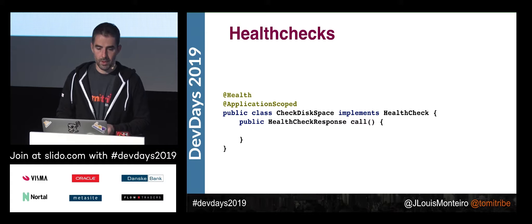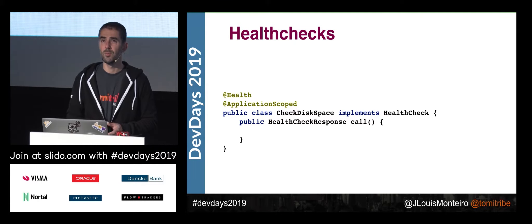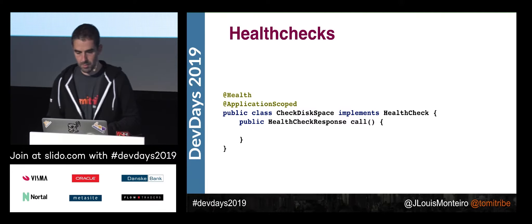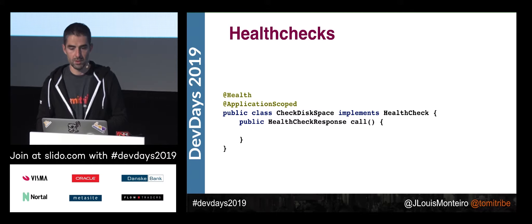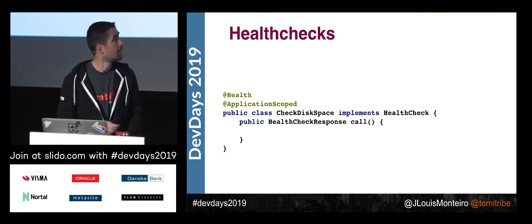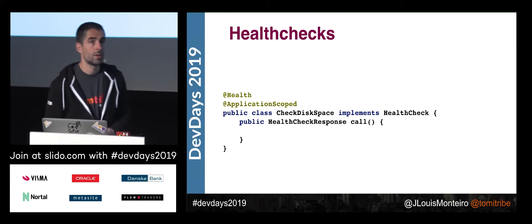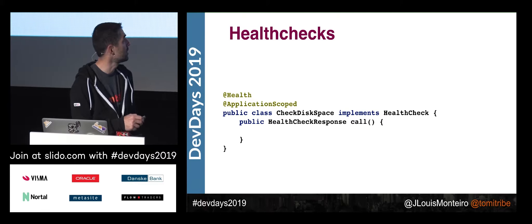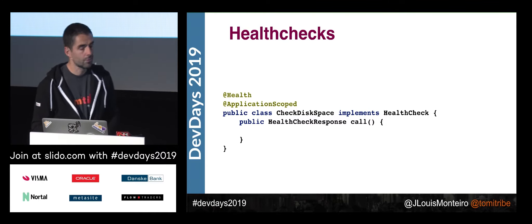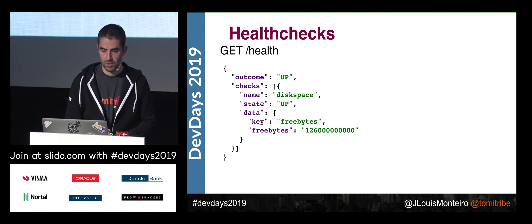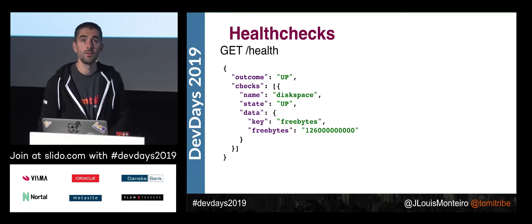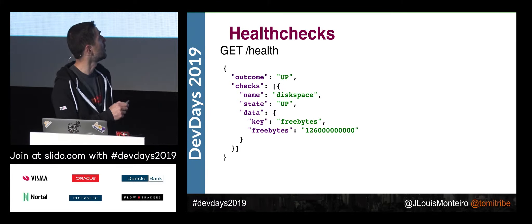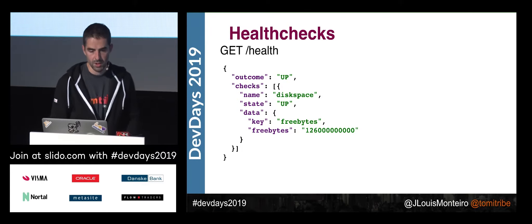In terms of implementation, for those who've used Dropwizard Metrics, it's really similar. You implement a HealthCheck interface, add the @Health annotation, and then write whatever logic you want in the body. You just need to return a HealthCheckResponse. When you hit the /health endpoint you get the list of all checks that ran and the overall outcome, which depends on the outcome of each individual check.